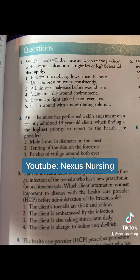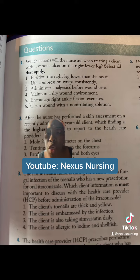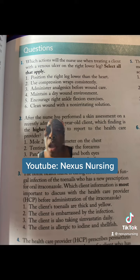Two: use compression wraps consistently. True. Those compression wraps are going to help promote that blood to go back up to the heart — venous return. Three: administer analgesics before wound care. Absolutely, because it's going to be painful for the patient.